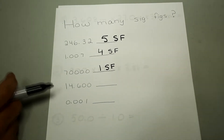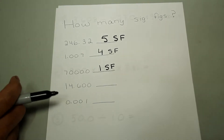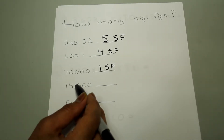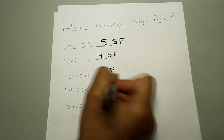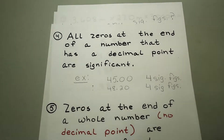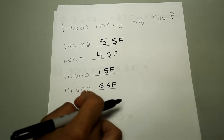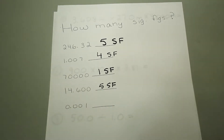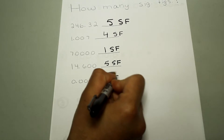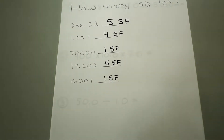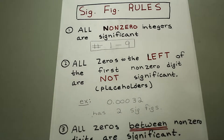Then we have 14.6000 and that one has five significant figures. That's because zeros at the end of a number with a decimal point are significant — so these zeros are significant because of the decimal point. The next one, 0.0001, only has one significant figure, because zeros to the left of the first non-zero digit are not significant.